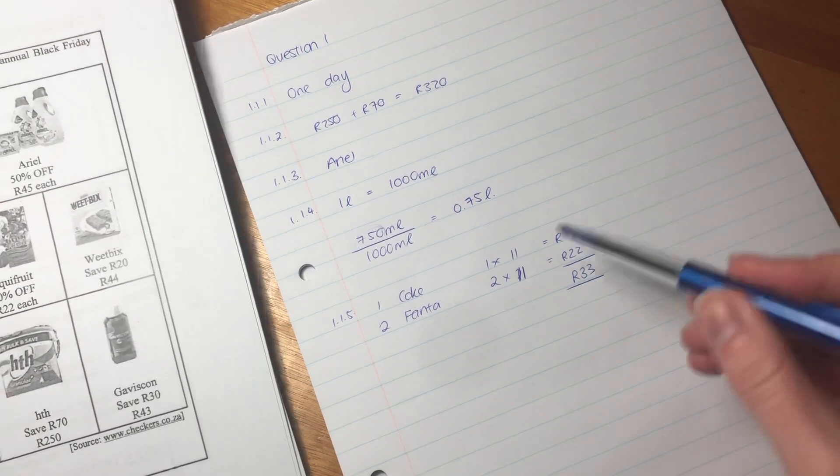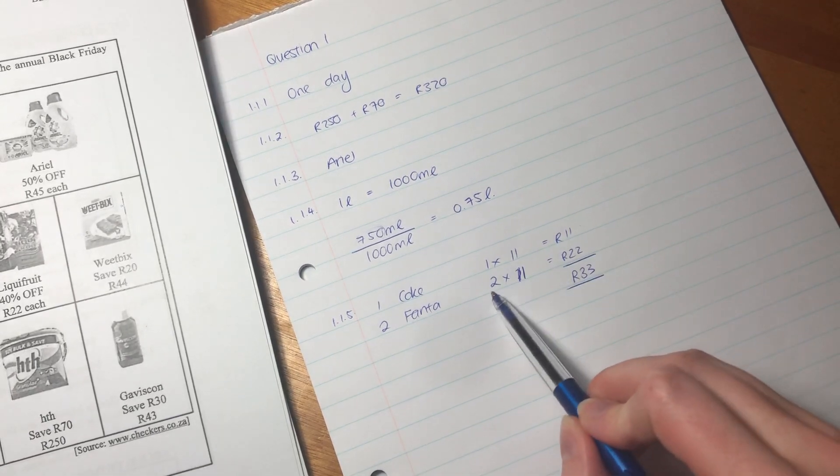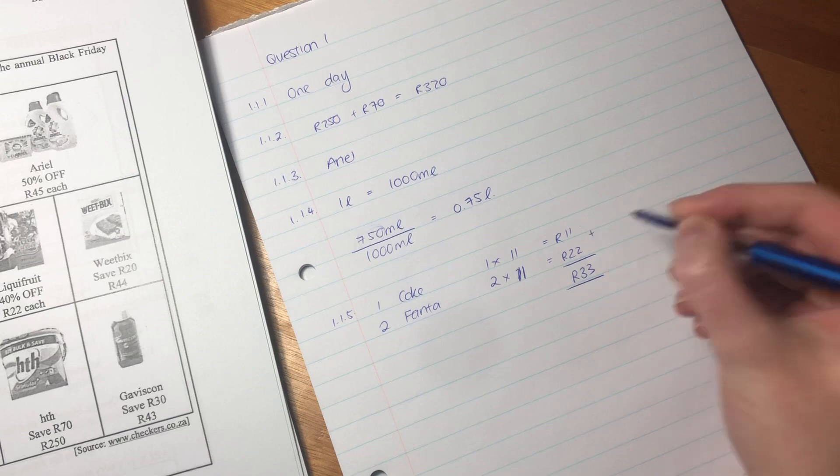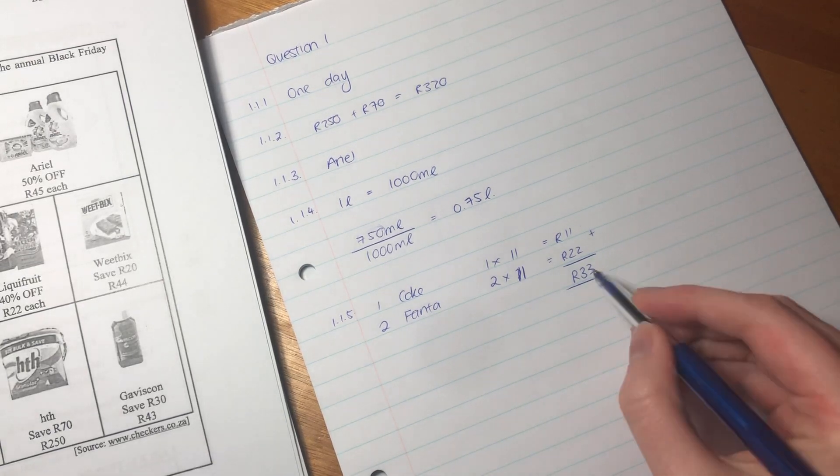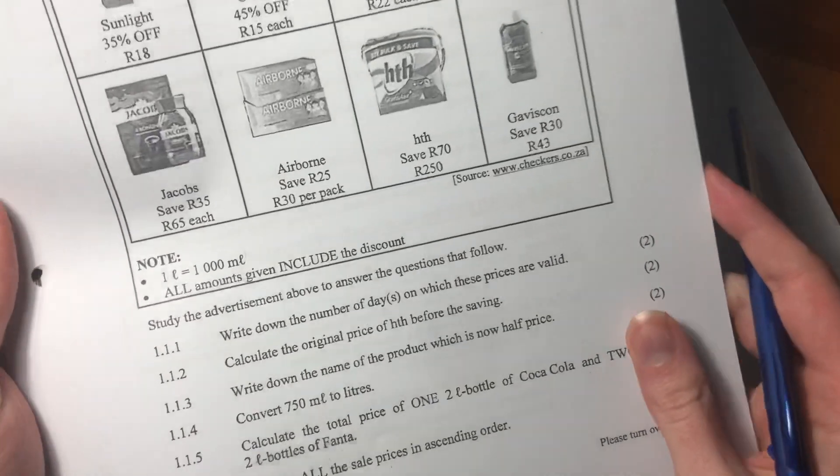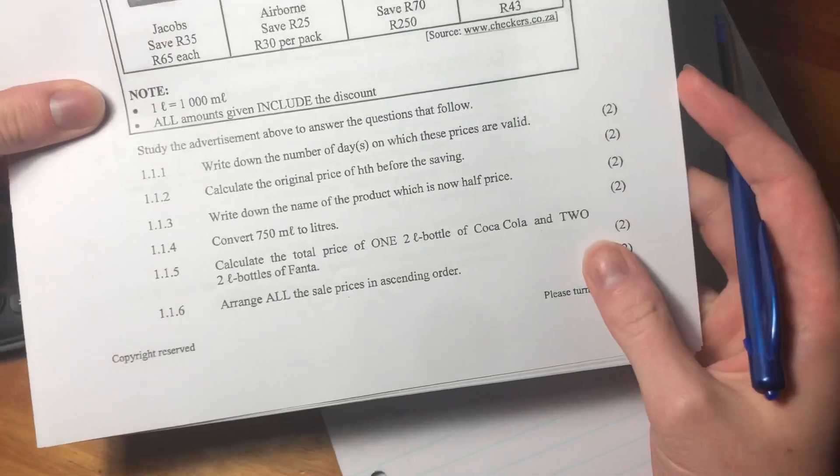The total cost is going to be 33 rand, because 1 times 11 is 11, 2 times 11 is 22, and 11 plus 22 is 33. So my total cost for one Coke and two Fantas is 33 rand.